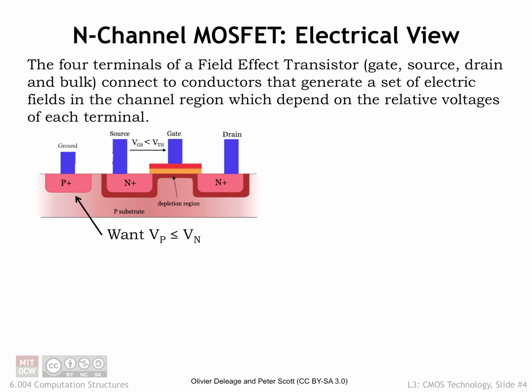Now let's look at the electrical view of the MOSFET. Its operation is determined by the voltages of its four terminals. First we'll label the two diffusion terminals on either side of the gate terminal. Our convention is to call the diffusion terminal with the highest voltage potential the drain, and the other, lower potential terminal, the source. With this labeling, if any current is flowing through the MOSFET switch, it will flow from drain to source.